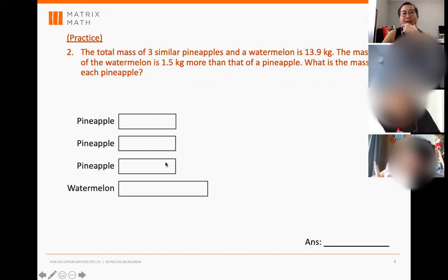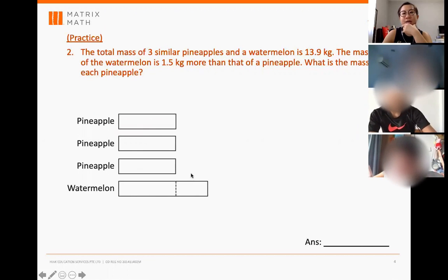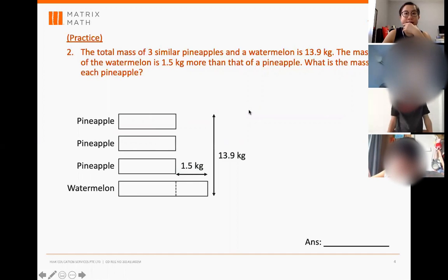So pineapples, yes, Nathan. So yes, pineapple, you have three, then watermelon is here. So this extra is 1.5 and we know that the total is 13.9.